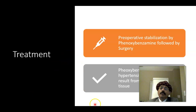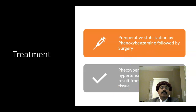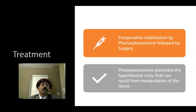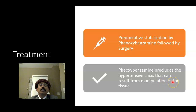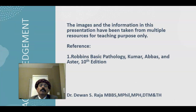Treatment involves preoperative stabilization with phenoxybenzamine, followed by surgery. This is a surgical case and the tumor should be removed surgically. Once removed, many patients will be free from hypertensive episodes. Before surgery, we must stabilize the patient with phenoxybenzamine — an alpha blocker — which will prevent hypertensive crisis that can result from manipulation of the tissue during surgery.